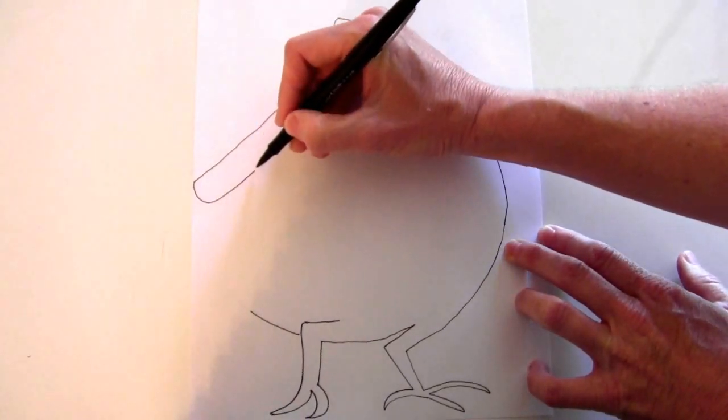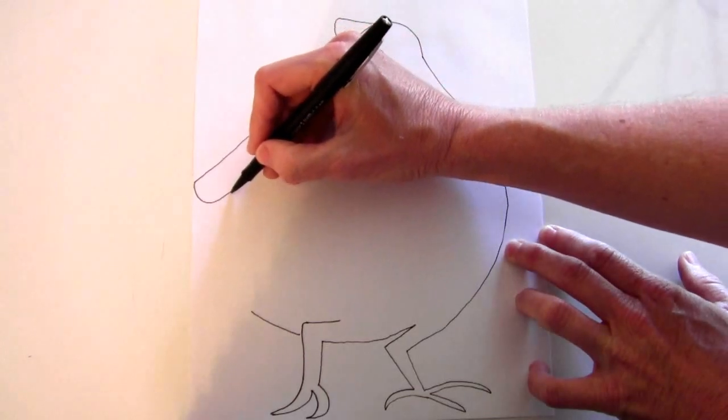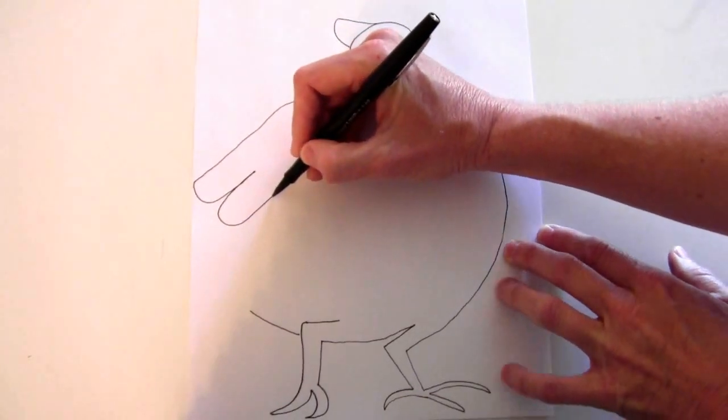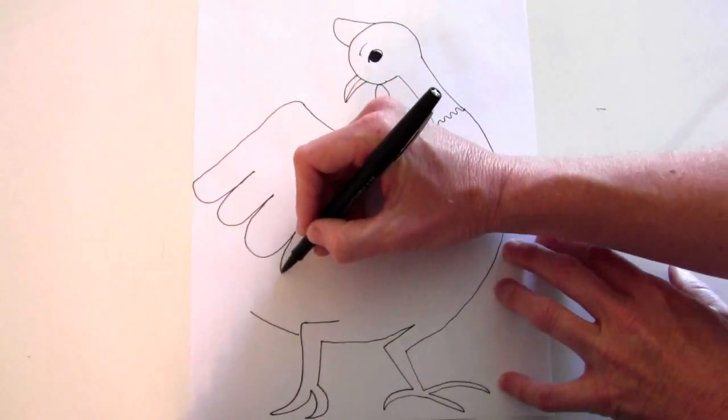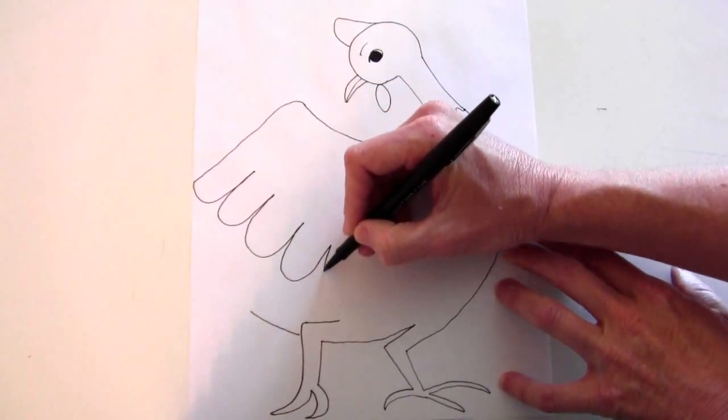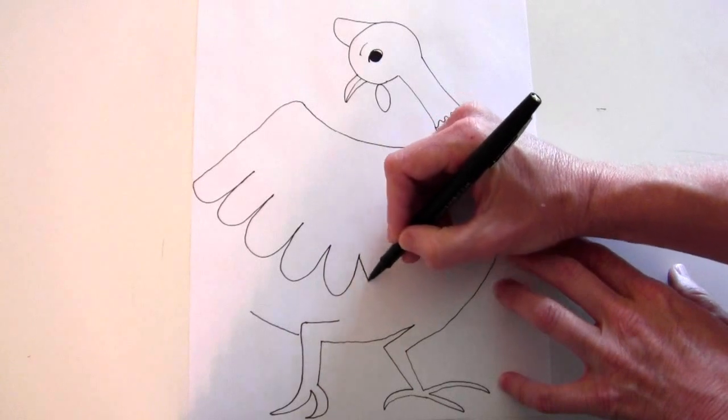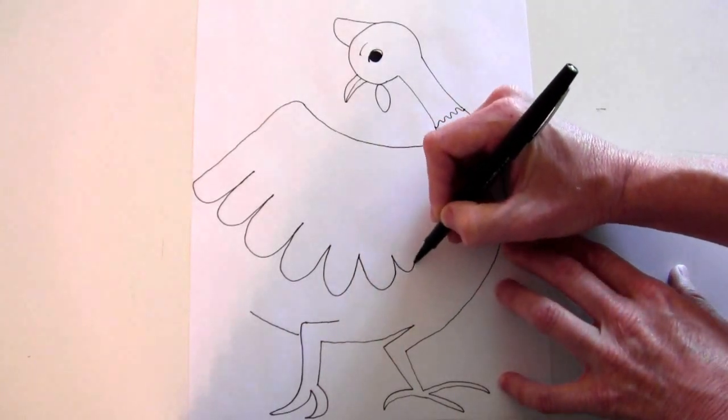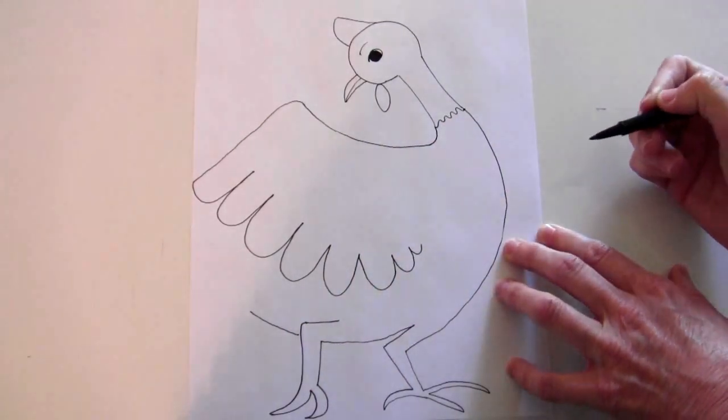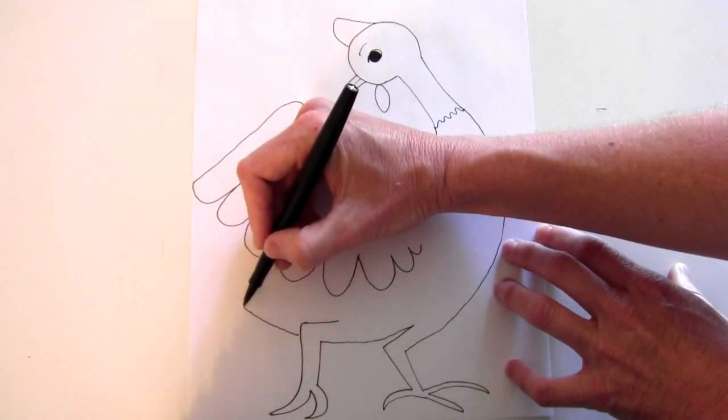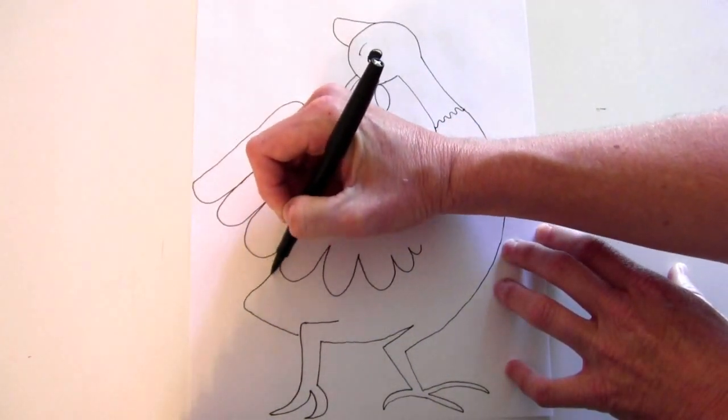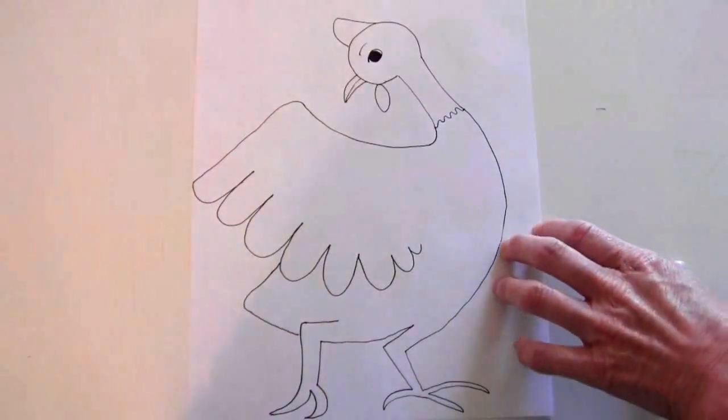And then start making these curves for the wings, the feathers on the wing. Big swooping, and they get a little bit smaller and smaller as they come in. Now from here, you can curve this up, like that.